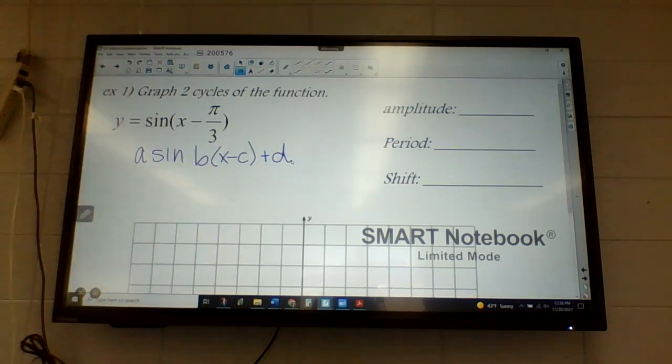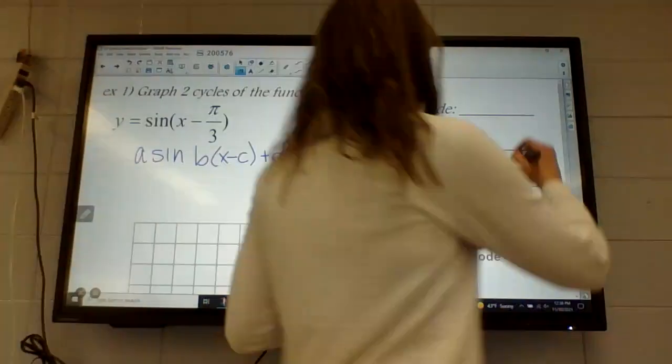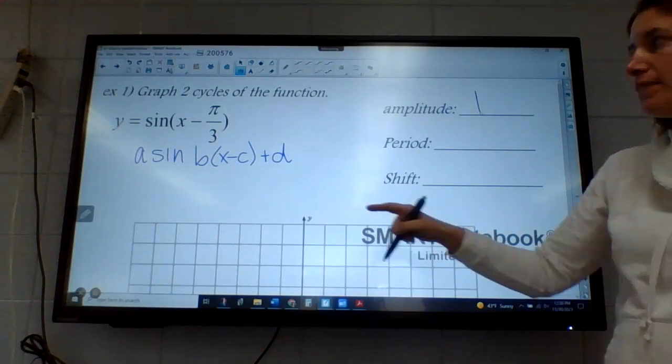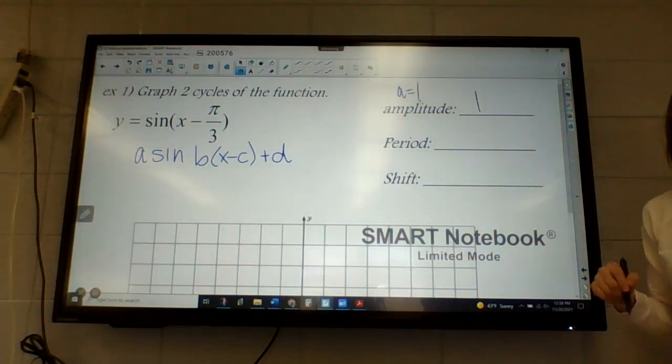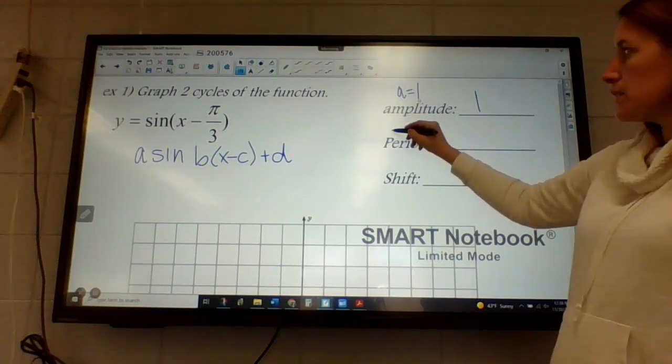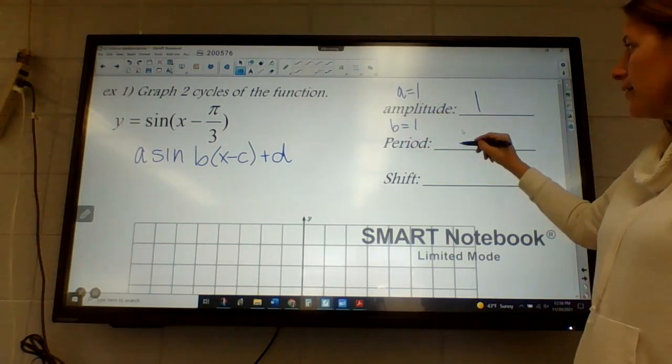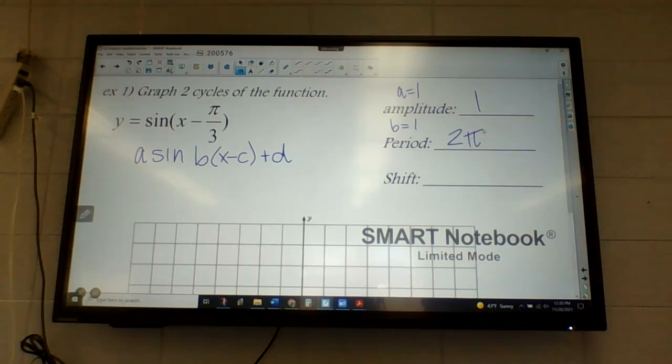So what's our amplitude? One. The amplitude is one. There's no A value written there, so A is one. How about the period? The B is one, so our period is just going to be two pi. So a normal period, like same old that we're used to.